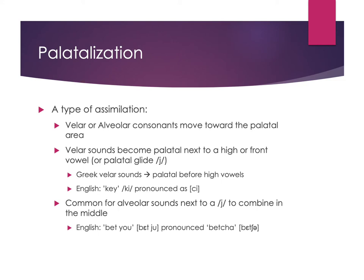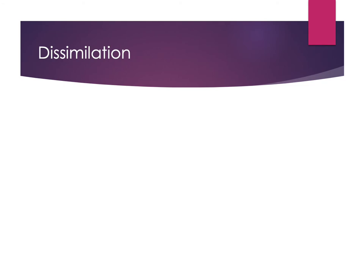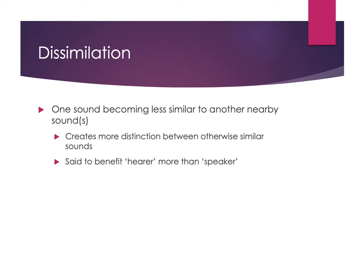If sounds can assimilate and become more similar, it also makes sense that we can have dissimilation, where sounds become less similar to each other, creating more distinction between otherwise similar sounds. Some say this benefits the hearer more than the speaker, though it can help with both, since producing distinct sounds can be easier than producing similar sounds close together. An English example is the word 'February' — for most speakers, that first R is not pronounced; you hear 'February' instead, because with another R later in the word, it turns into a Y sound to create distinction.